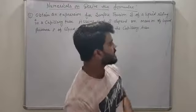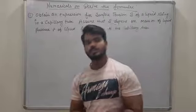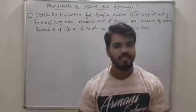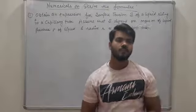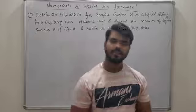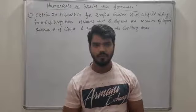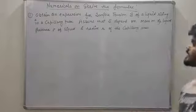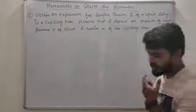In the beginning, we saw that the first step was the principle of homogeneity. The second step was checking the correctness of physical quantities. The next step is to derive the formula on numericals.